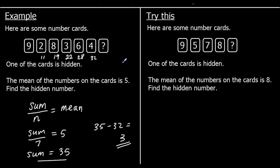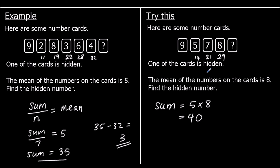Here's a question for you to try. Again we've got number cards with one hidden and we're told the mean. There are five numbers and their mean is eight, so the numbers must add up to forty. We've got nine and five which is fourteen, add seven is twenty-one, add eight makes twenty-nine. We need forty, and forty take away twenty-nine is eleven, so the missing number is eleven.